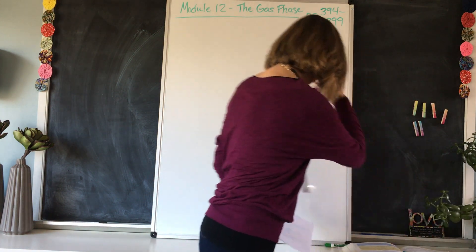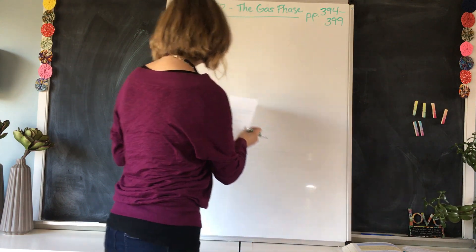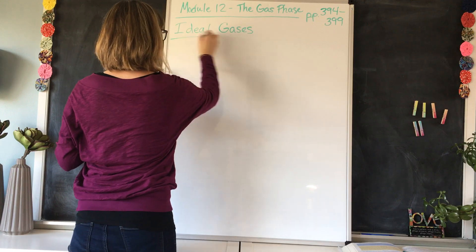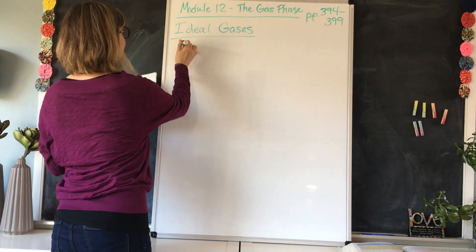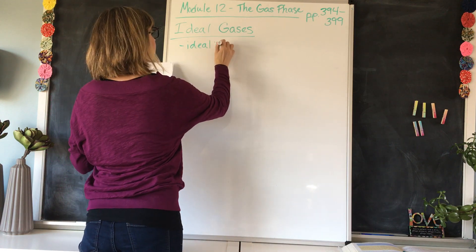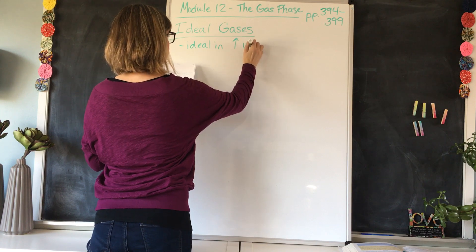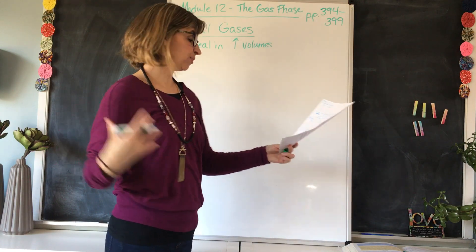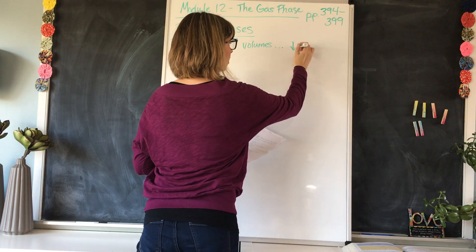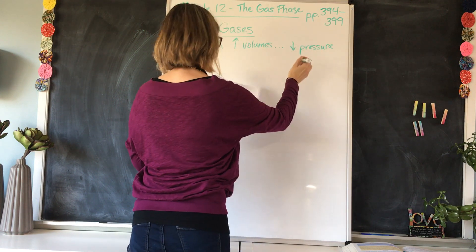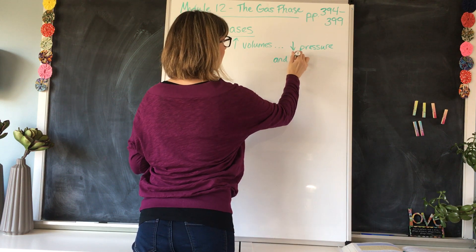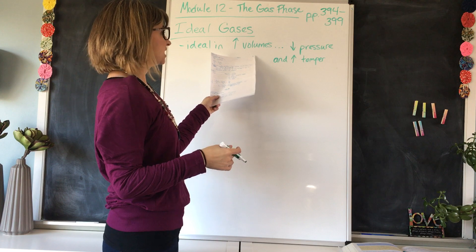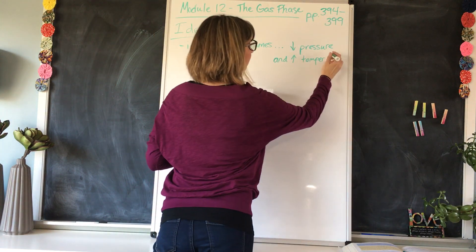Now let's take some notes on what we need to know. Ideal gases. They are ideal in large volumes. And if we have a large enough volume, remember, as volume increases, that would mean that you would have low pressure and high temperature. So in order for gases to behave as ideal, they are in a container with a large volume, there is low pressure and higher temperature.